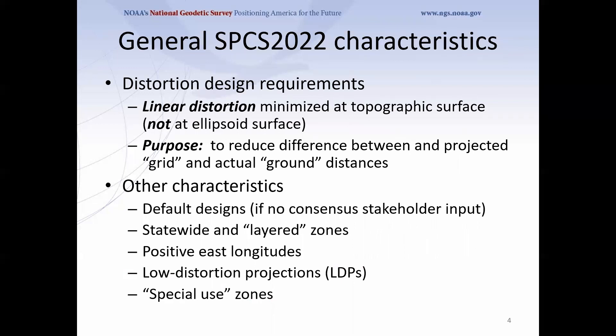The general characteristic that differentiates SPCS2022 from state plane 83 is linear distortion — that is, scale error. The difference between grid and ground is minimized at the topographic surface rather than the ellipsoid surface. There's also a default design: if we don't get consensus stakeholder input from a state, we'll still design zones, but they'll be a lot like your state plane 83 zone. We will design a statewide zone, and you can also have zone layers. Low distortion projections are allowed, and special use zones too.